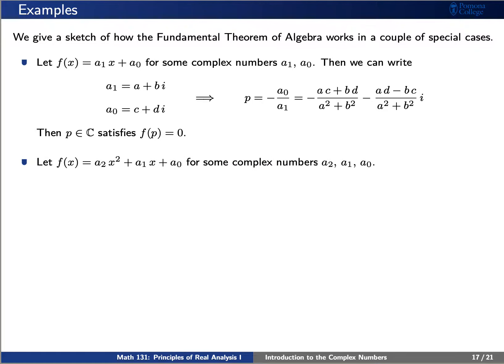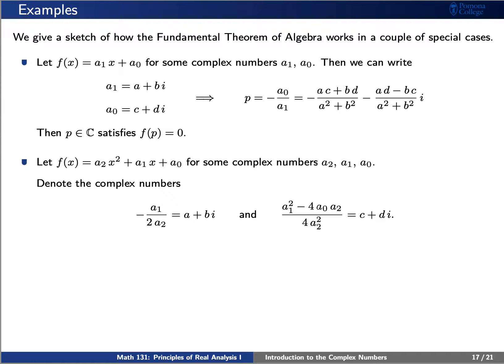The more interesting case happens when f of x is a quadratic polynomial. Let's write f of x as a sub 2 x squared plus a sub 1 x plus a sub 0 for some complex numbers a sub 2, a sub 1, and a sub 0. Let's write negative a1 over twice a2 as a plus bi, as it's a complex number. And we'll write a1 squared minus 4 a0 a2 divided by 4 a2 squared as c plus di, since it is also a complex number.